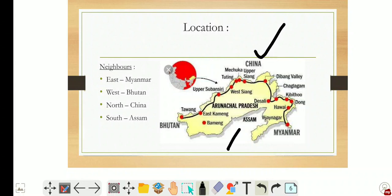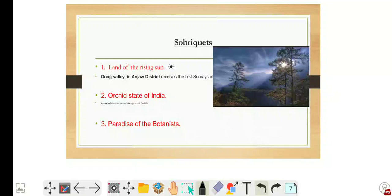Now let's have a look at the sobriquets given to Arunachal. First is the Land of the Rising Sun. It is called the Land of the Rising Sun because it is located on the easternmost part of India, also called the easternmost state of India, because it receives the first sun rays in India. The Dong Valley in Anjaw district receives the first sun rays in India.